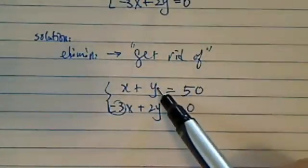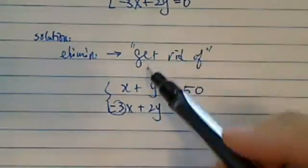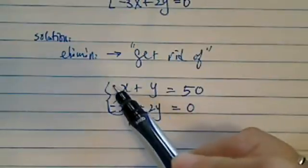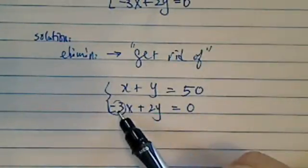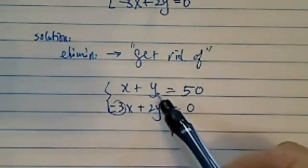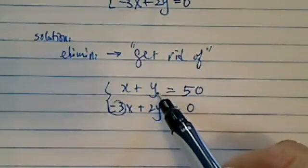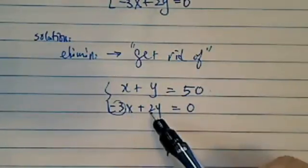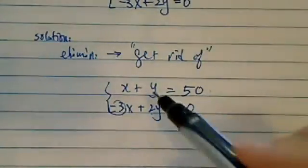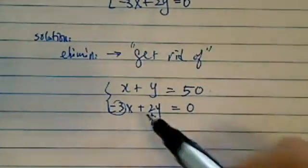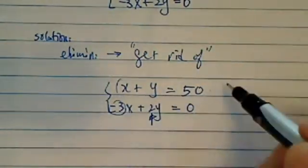So in this case we can either do y or x, it doesn't matter. If you want to do x, you multiply by 3, then it will be opposite of minus 3 here. If you want to do y, then multiply by minus 2 of the whole thing, then that would be opposite of this 2. So let's just pretend that we pick this one.